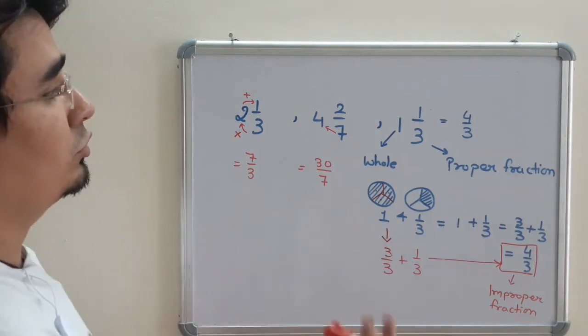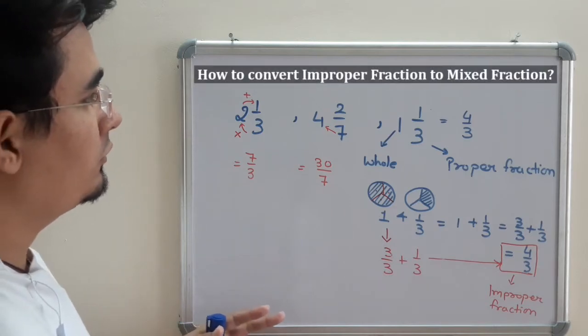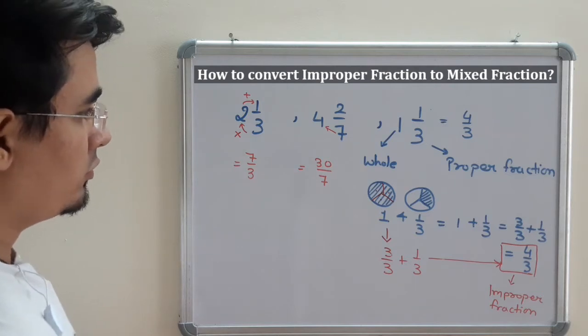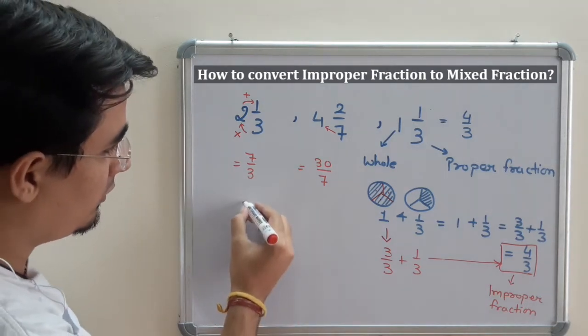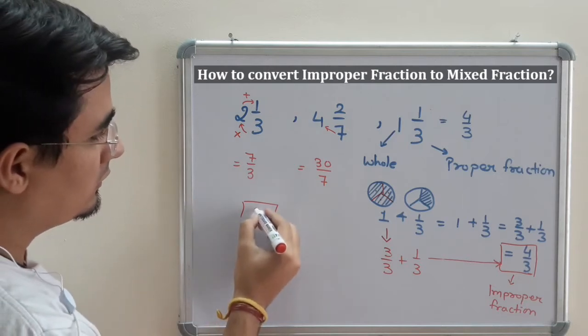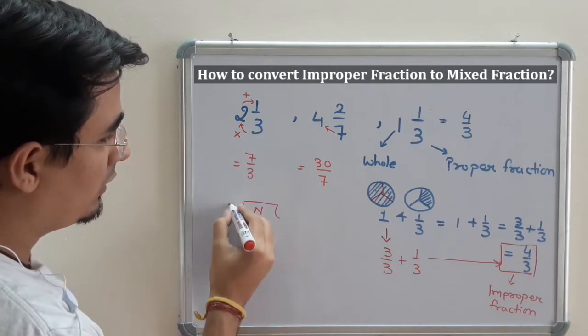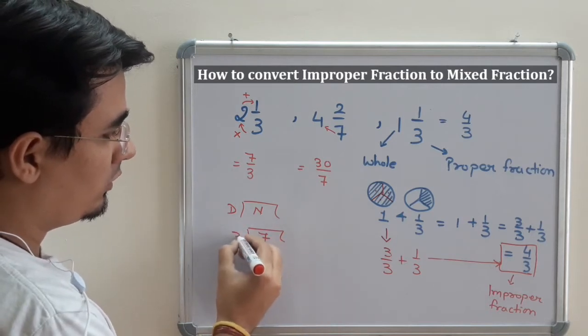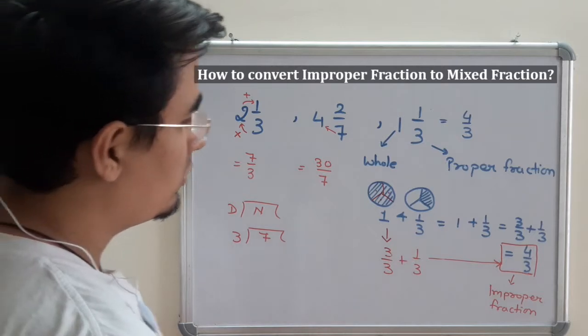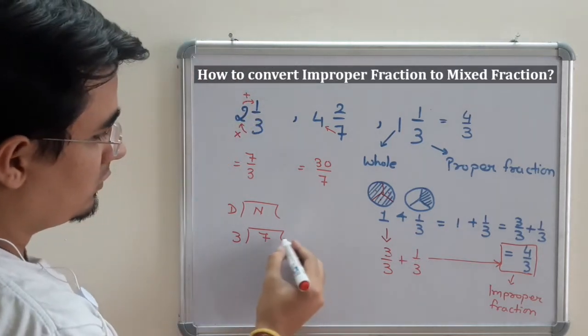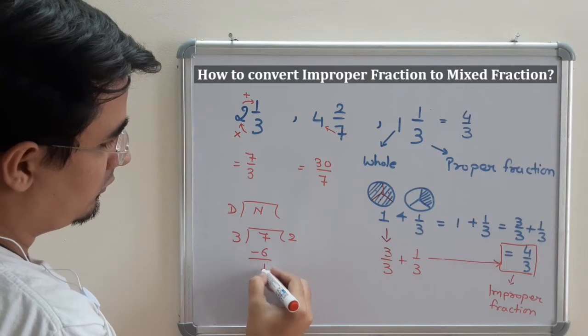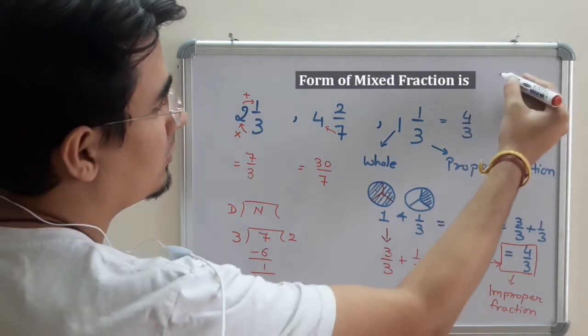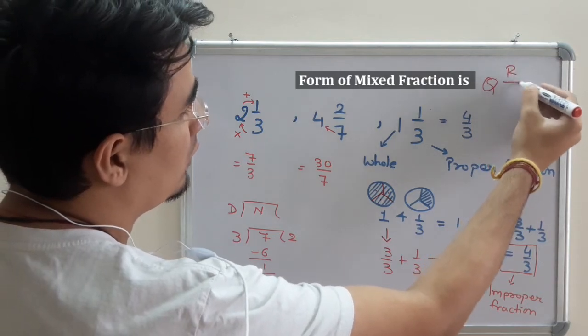Suppose another question comes where we have to convert improper into mixed fractions. We will be dividing numerator inside and denominator outside. So this is 7 inside and 3 outside. Write the table, but don't go into decimal parts. So 2 times 3 is 6, remainder 1. So mixed fraction form is q r upon b.